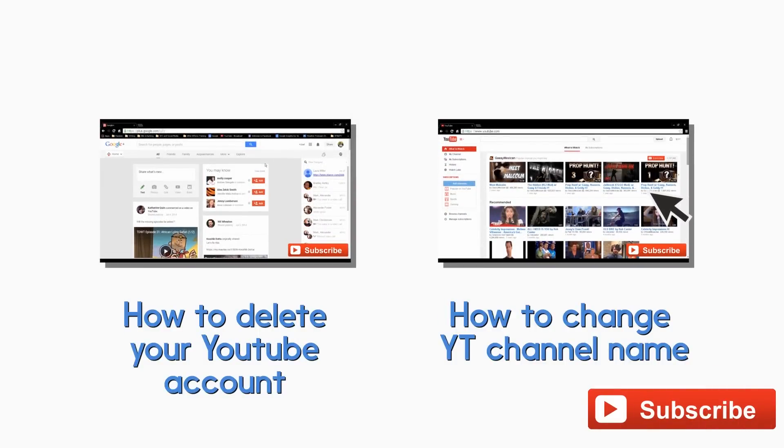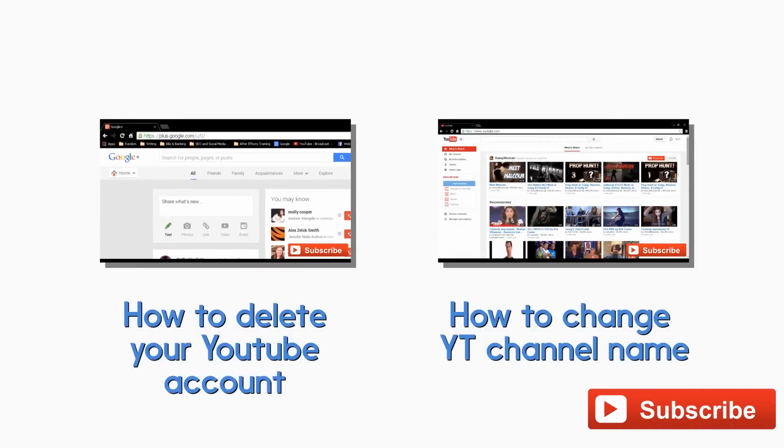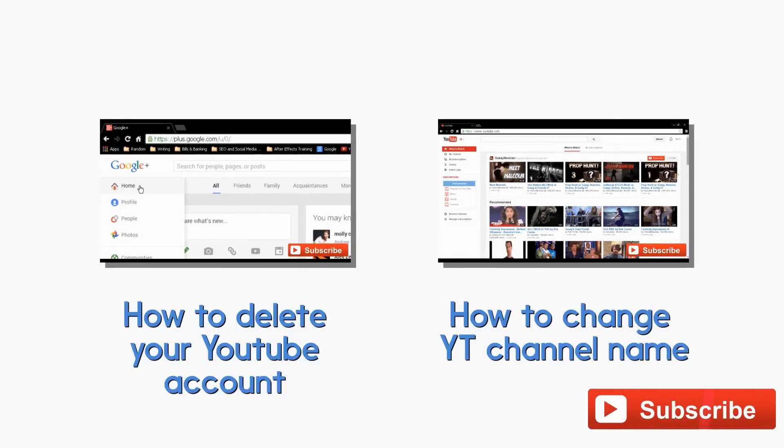To start, go to Google Plus and log in. Click the arrow on the top left side of the page in the dropdown menu, then click settings.